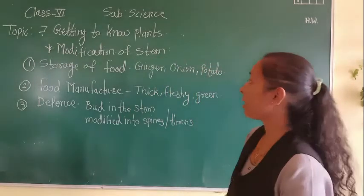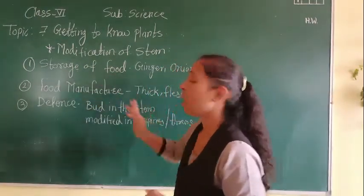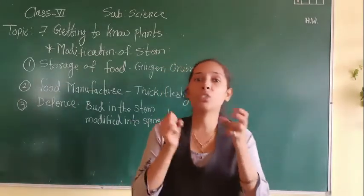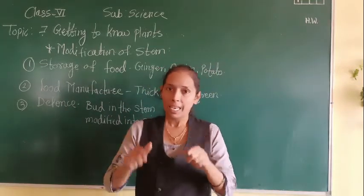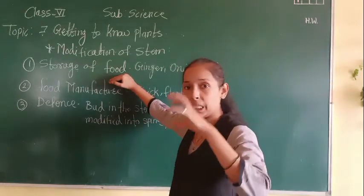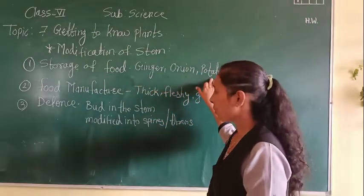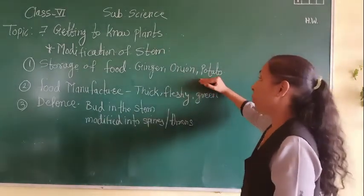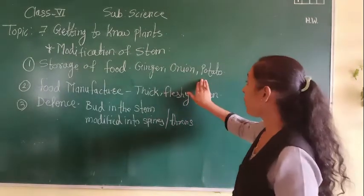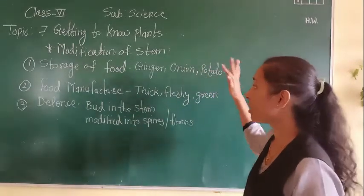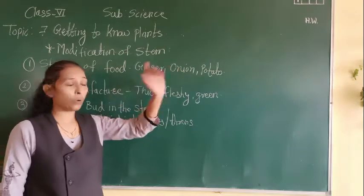Now we will see our main point: modification of stem. The first modification of the stem we are going to discuss is storage of food. Just as certain roots store food and are called storage roots, there are certain stems which also store food. For example, ginger, onion, and potato. My dear students, keep this in mind - it is very important: potato is a stem while sweet potato is a root. The potato is an underground stem that stores food, which is why it is bulky.